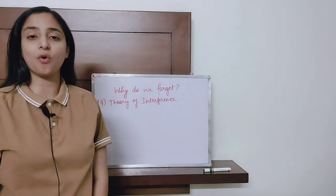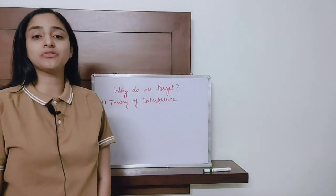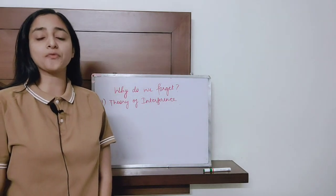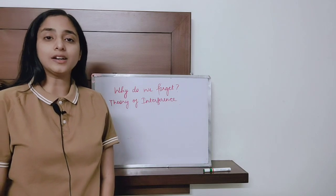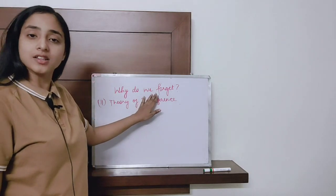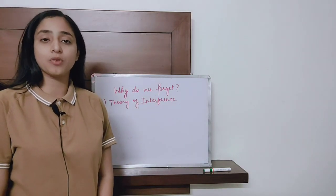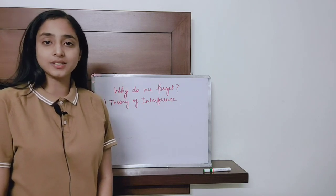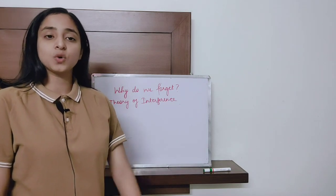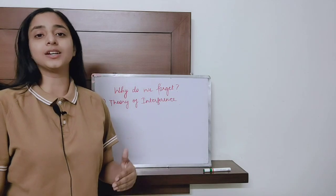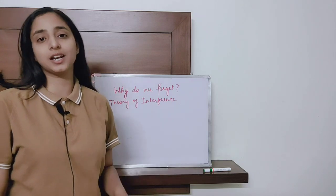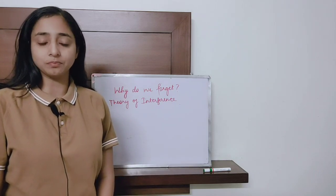Now let's discuss the second theory of forgetting, which is known as the theory of interference. This theory says that whenever we learn or memorize something, we do it in the form of certain associations — we try to interlink various concepts. Whenever there is any disturbance in this interlink, we are certainly going to forget something.